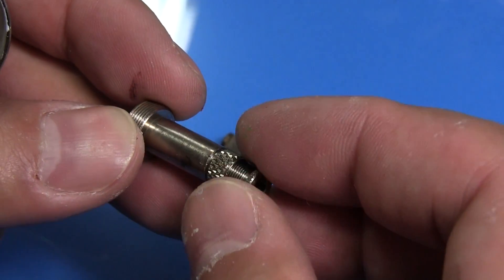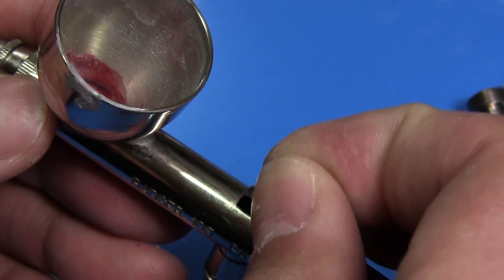Loosening the spring screw will give you access to the needle tube spring. Then we pull out the back lever.